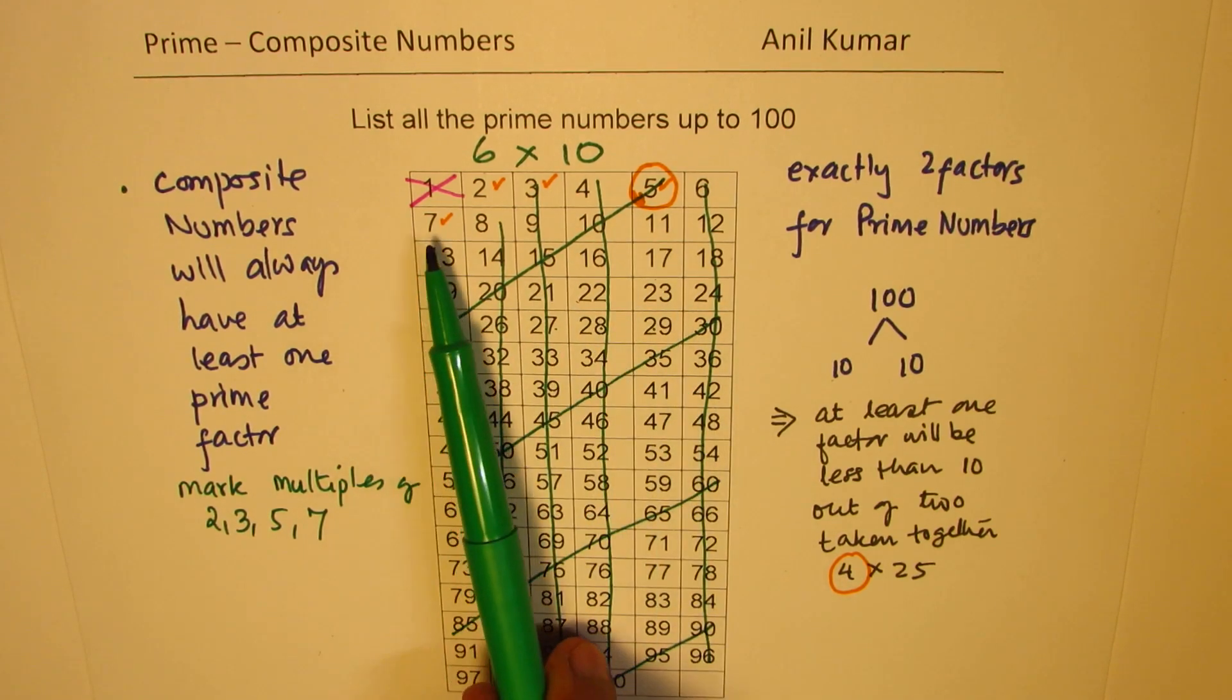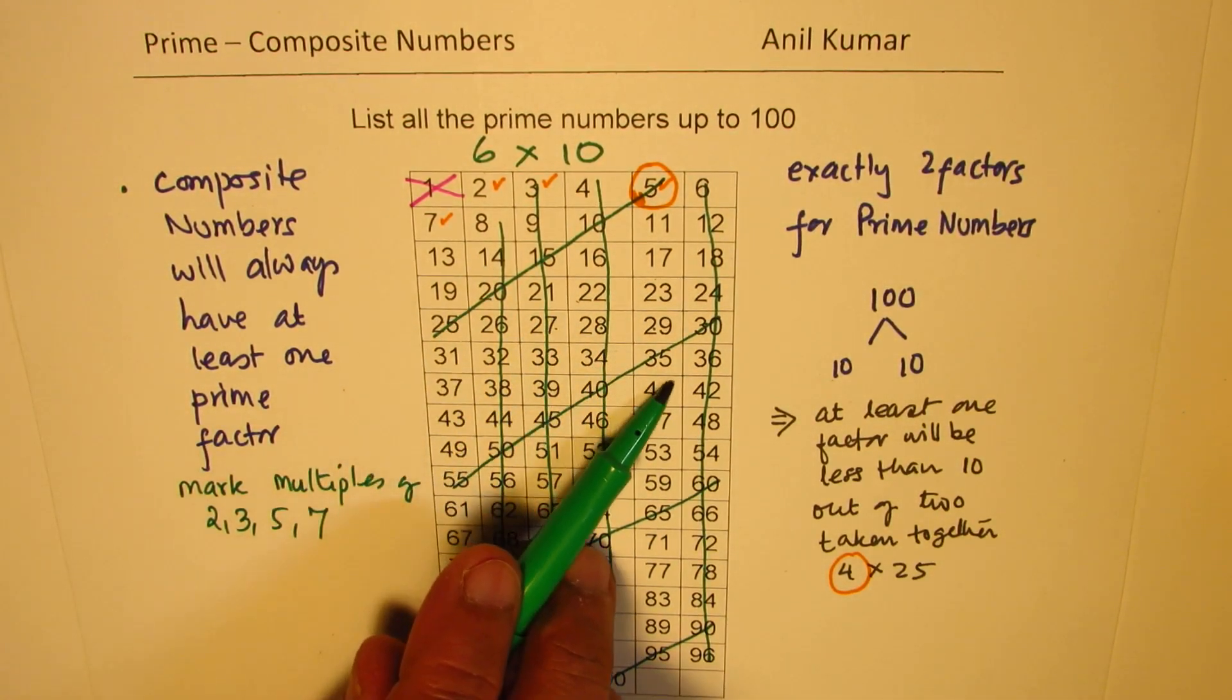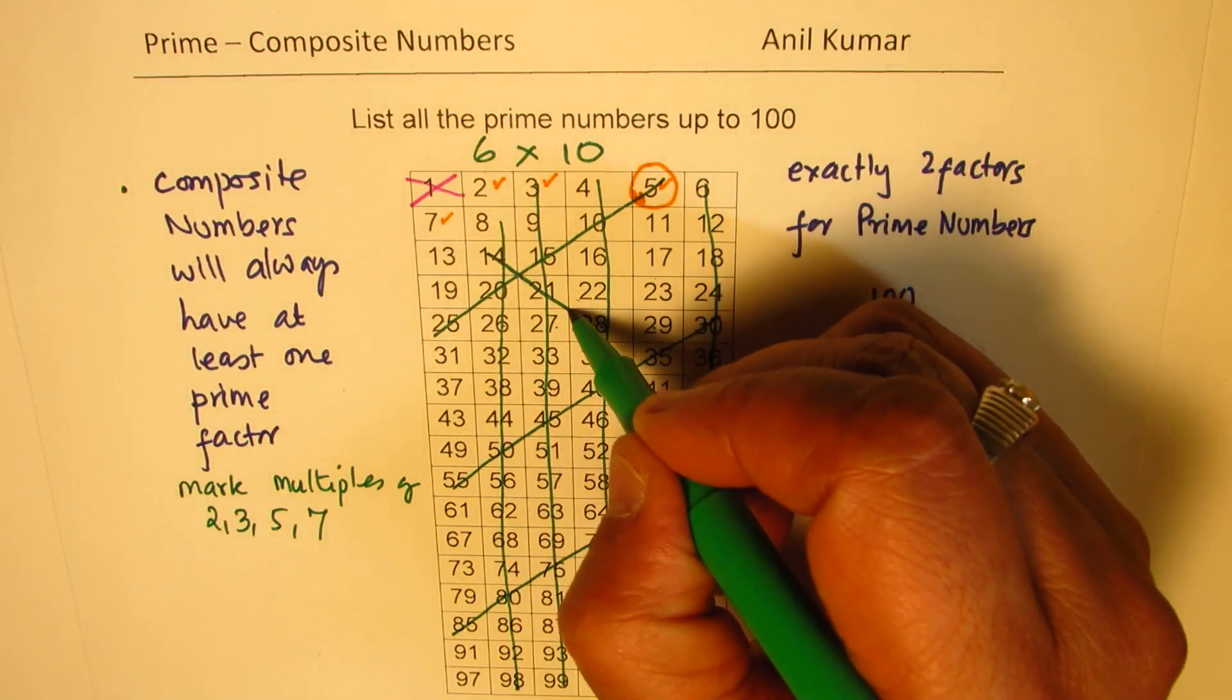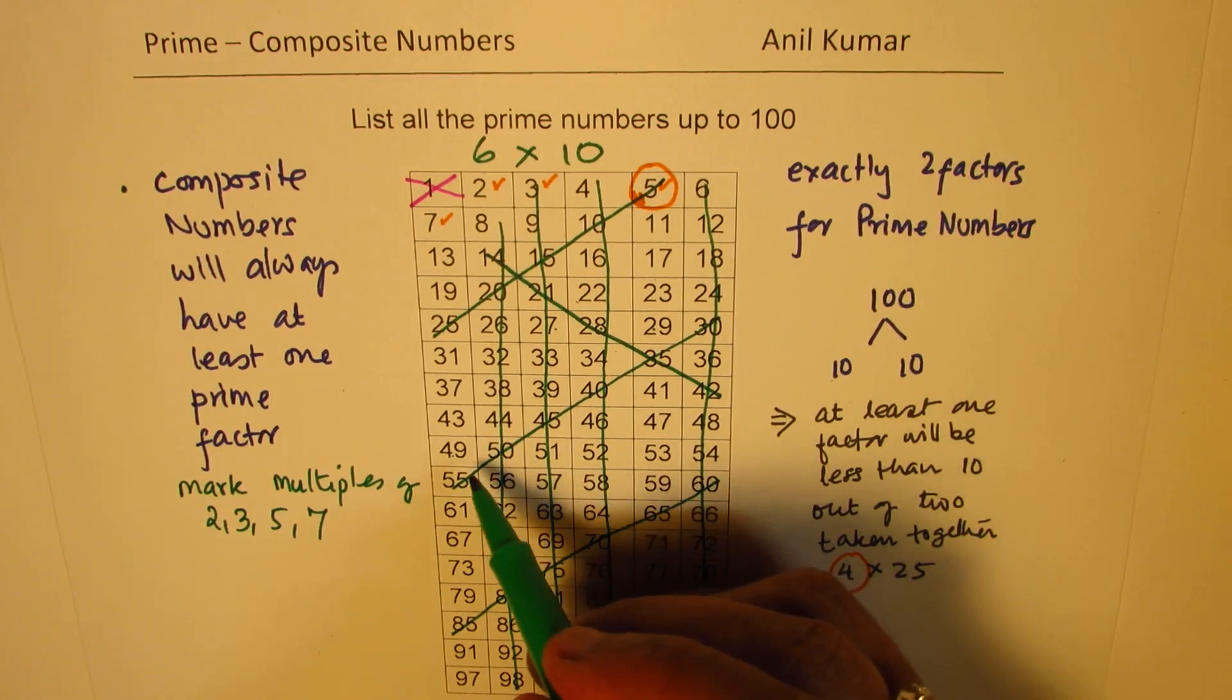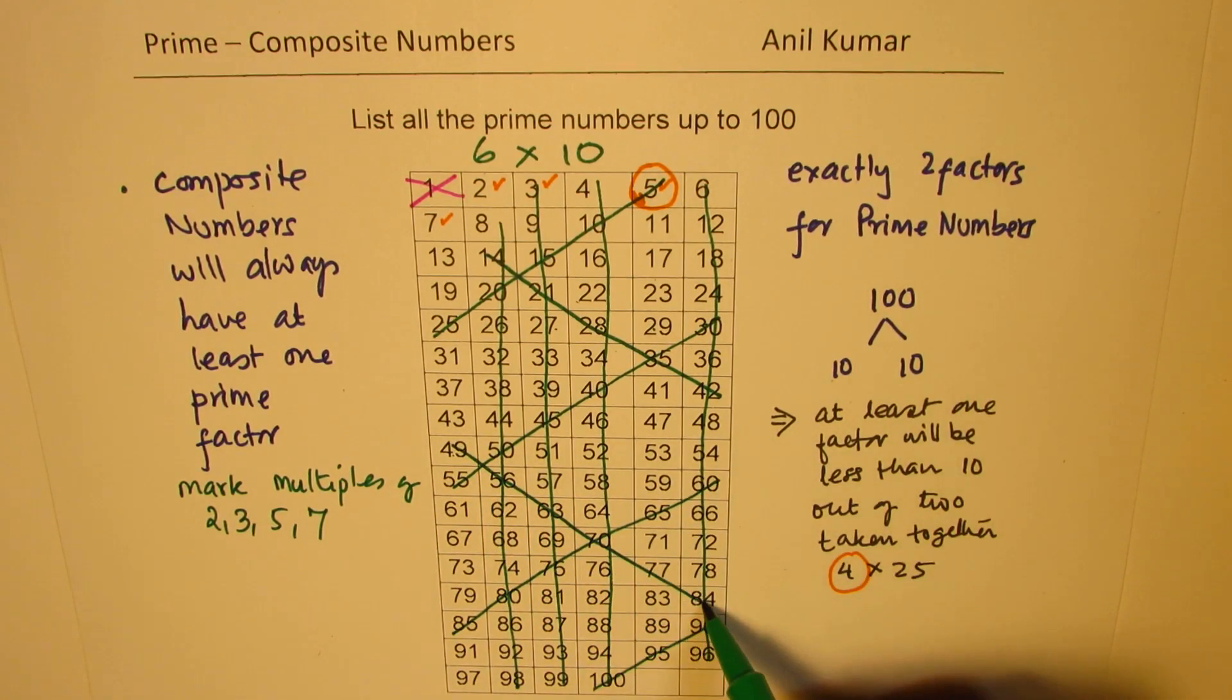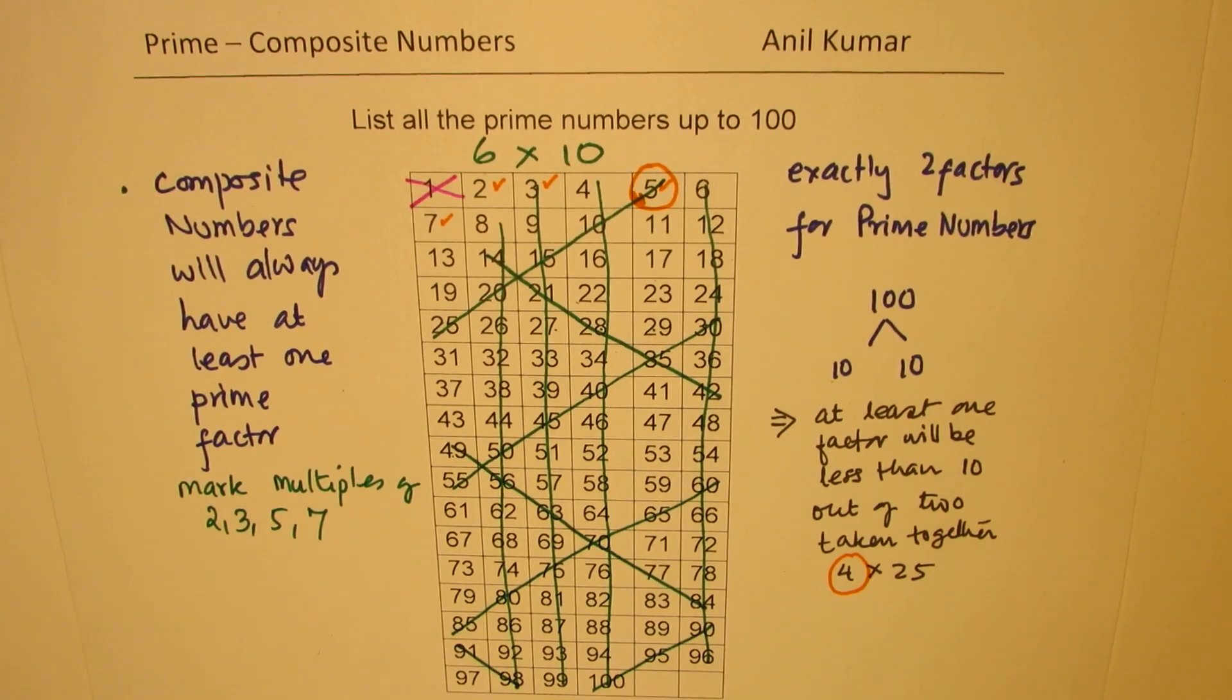Now, we need to cancel the multiples of 7. So 7 times 2 is 14, 21. You observe that they are also diagonally placed. So it's very easy to find it when you arrange in this order. So we'll cancel these, which is right there. So after 42, it is 49. So 49 and then 56, 63, 70, 77, 84. And after 84, it is 91. So 91 and 98 also gets canceled.